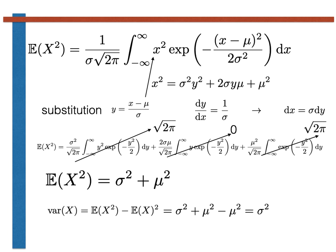To summarize: the mu parameter of the normal random variable is equal to the expectation for this type of random variable. The variance, meanwhile, is equal to the square of the sigma parameter. Thanks for your attention and good luck with the exercises that follow.